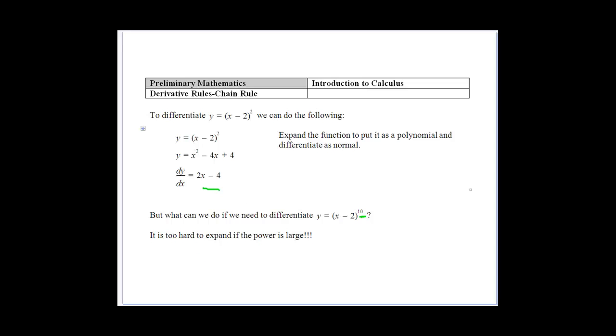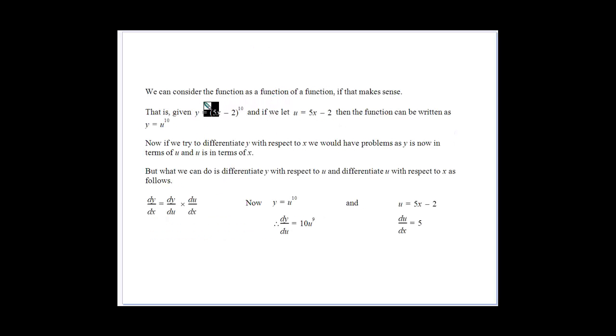This is where we use the chain rule, or function of a function. We're going to consider (5x - 2) to the power of 10, and do a substitution: let u equal 5x - 2. So we can write y in terms of u, and u is in terms of x. This is where we get the idea that we've got a function as a function of a function.